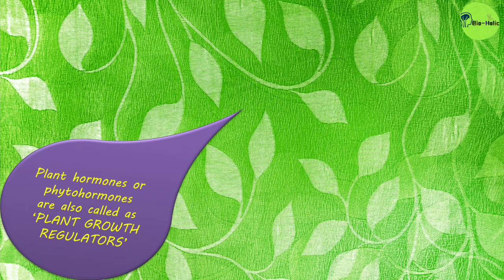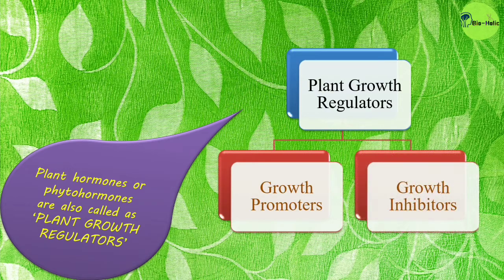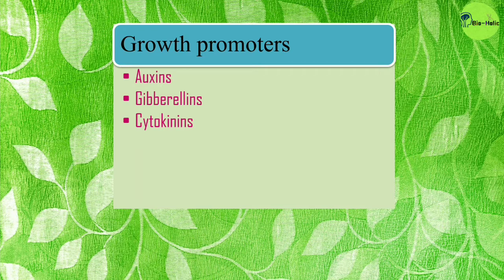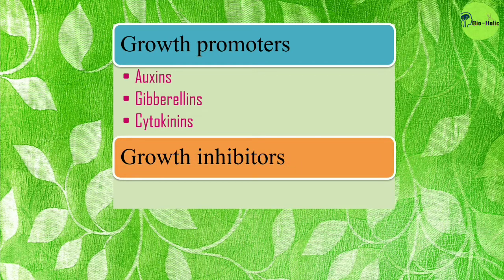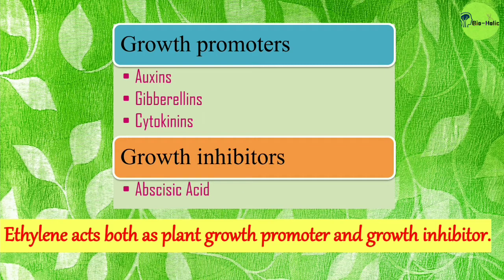Plant hormones, or phytohormones, are also called plant growth regulators because they regulate plant growth and development. They can be classified into two types: growth promoters and growth inhibitors. Auxins, gibberellins, and cytokinins are the growth promoters. Abscisic acid acts as a growth inhibitor, while ethylene acts both as a growth promoter and a growth inhibitor.